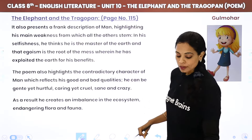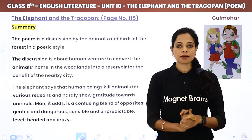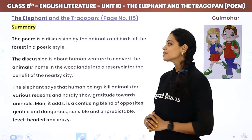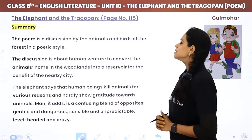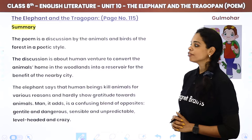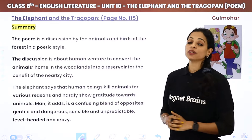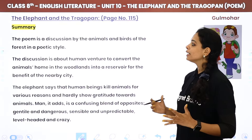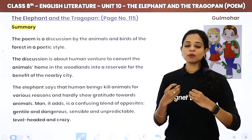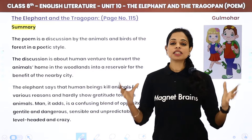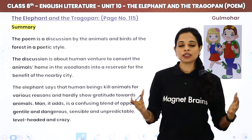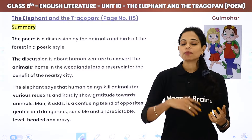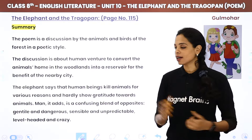Clear? Now let's come to the summary. The poem is a discussion by the animals and birds of the forest in a poetic style. This entire poem is a discussion among animals and birds in a forest, written in a poetic style.